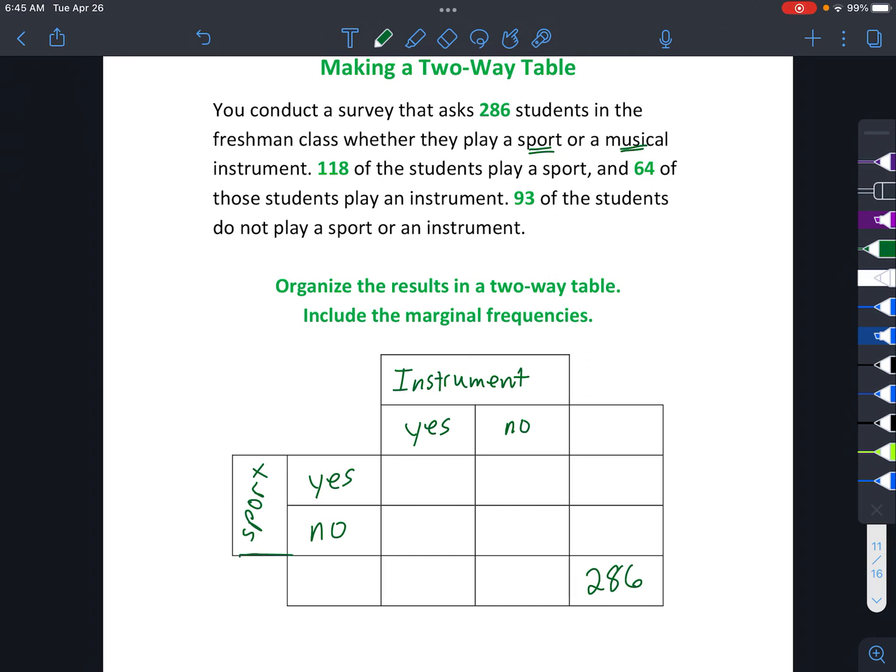And then it helps to think about it. You can kind of put an extra little line here. Sort of closes off the table. And the ones outside those lines are the marginal frequencies. Those are in the margins.